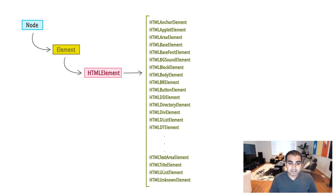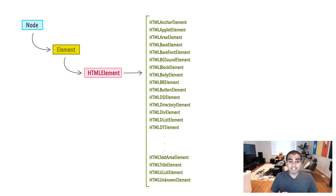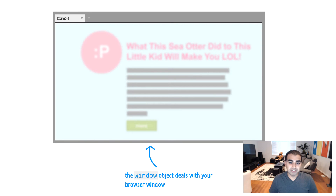And the reason this is pretty important is: by having an object representation, you can not only access these elements in JavaScript — which we'll look into in future videos — but it also allows you to modify them as well. Not only can you read, you can also write and modify. And further down the road, you can also create elements dynamically, add them to the DOM, which in turn adds them to what you see in the browser.